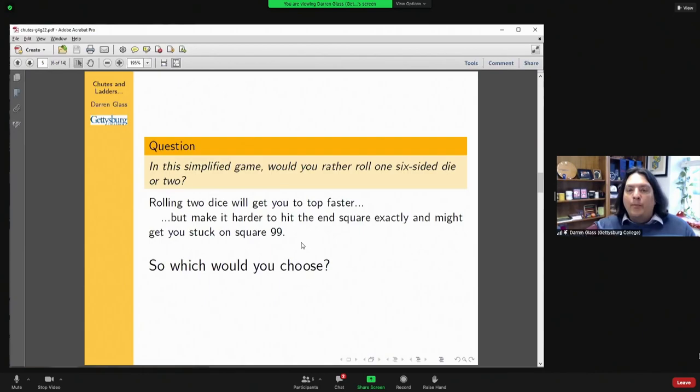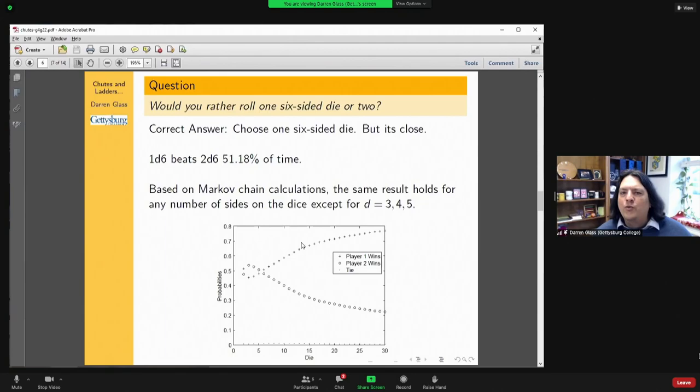That was the question we looked at. If you roll two dice, you're going to move up the board really faster because you're going to get lots of eights, nines, tens. But at the same time, it'll be harder to land on this last square exactly, and you might get stuck at square 99. So which one would you prefer: one die or two? If I were there in the room with you right now I'd have you all vote, and based on previous experience about half of you would choose one and about half would choose two. Well, that actually turns out to be pretty darn close to the right answer.